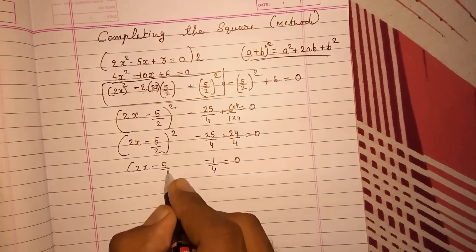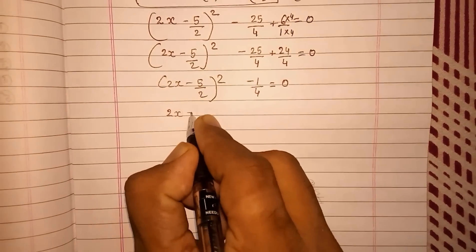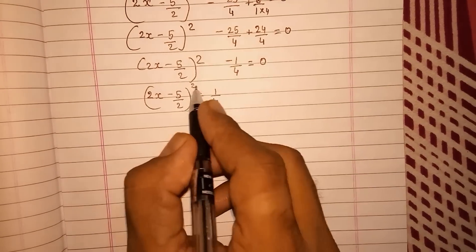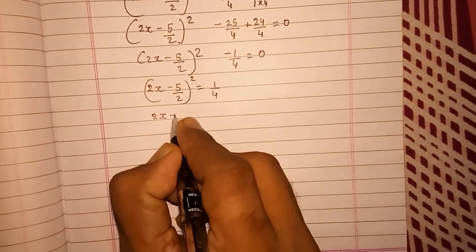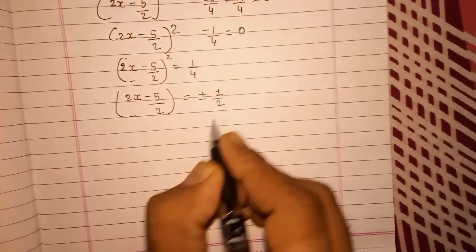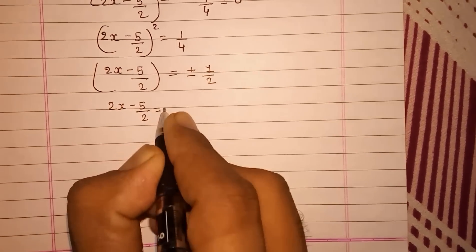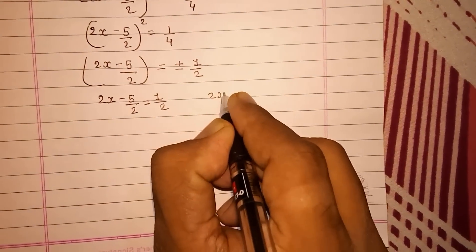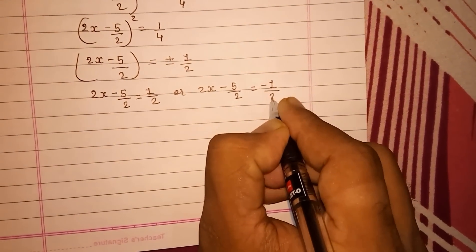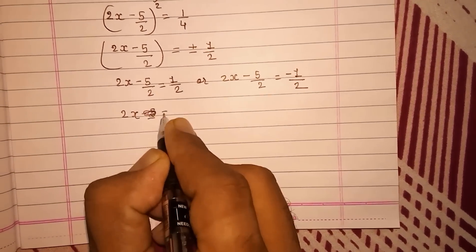And here 2x minus 5 by 2 whole square. Now take this minus 1 by 4 on the other side. So 2x minus 5 by 2 whole square gives you 1 by 4. So to remove this square, I have to find out the root of this number. So 2x minus 5 by 2 is equal to plus or minus 1 by 2.